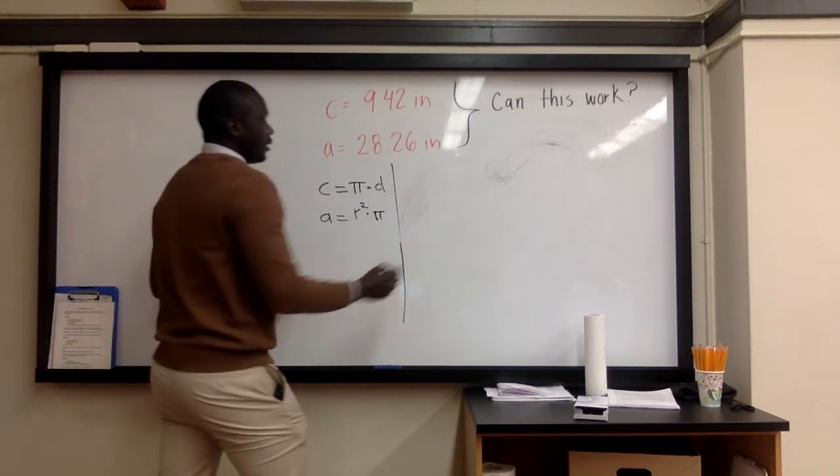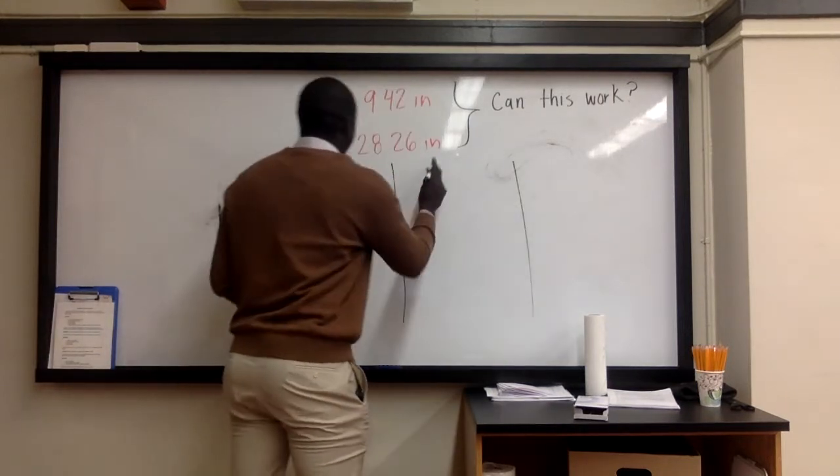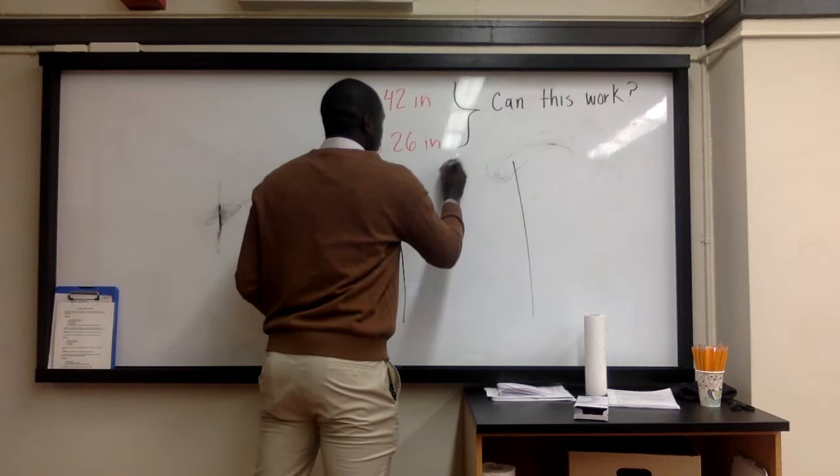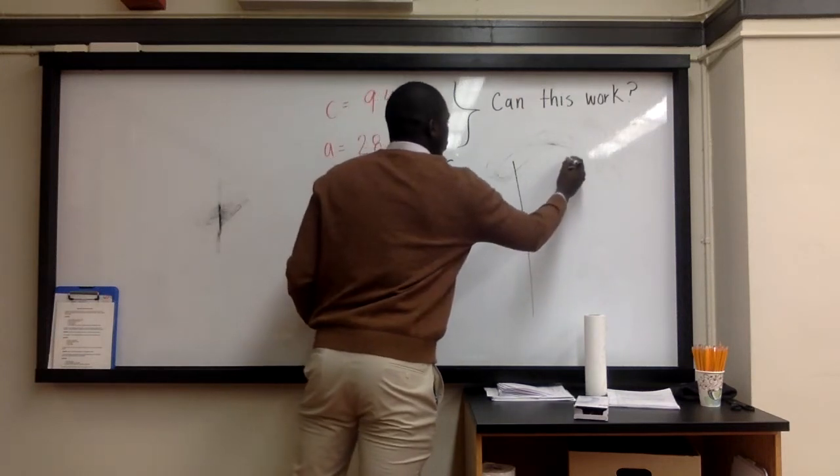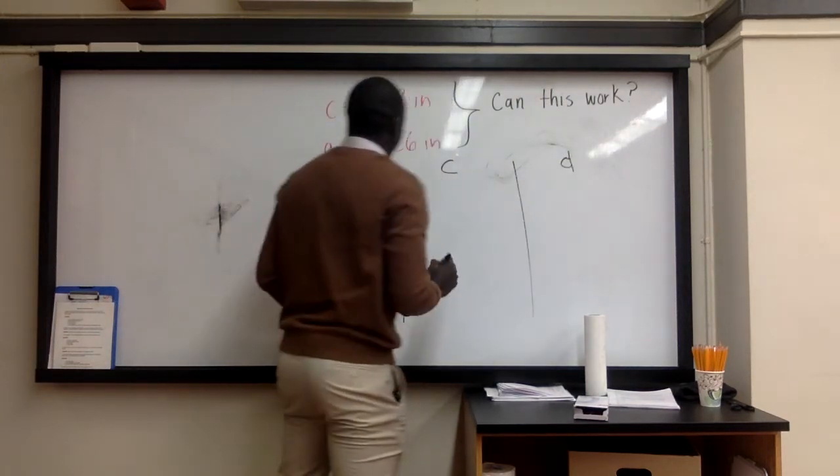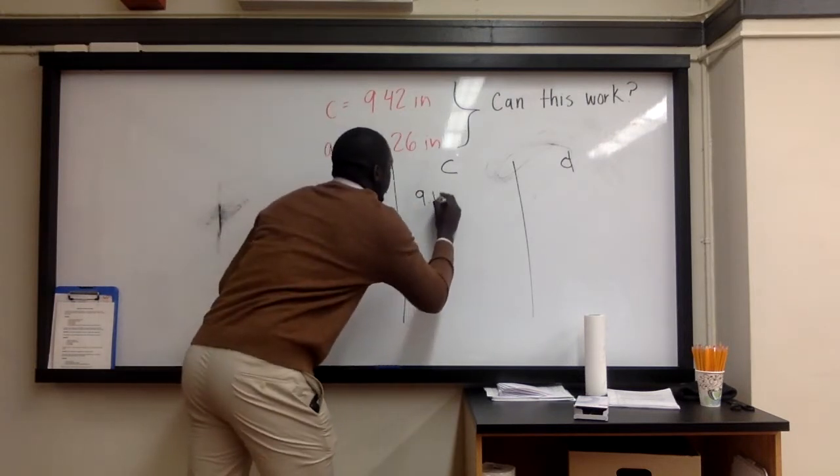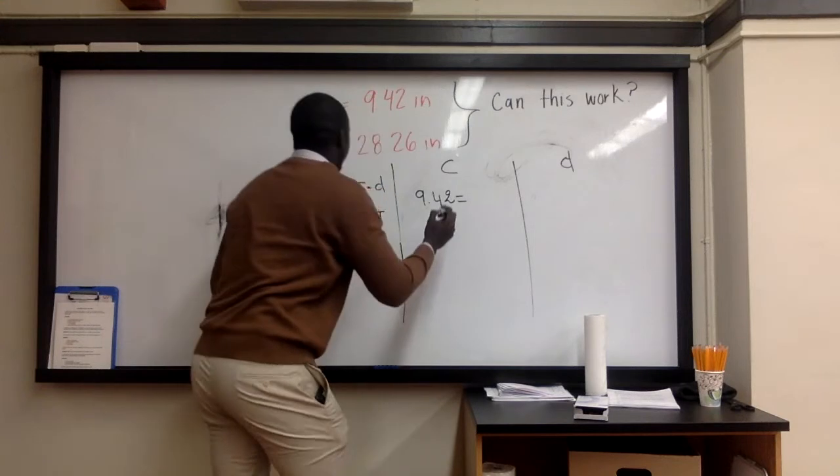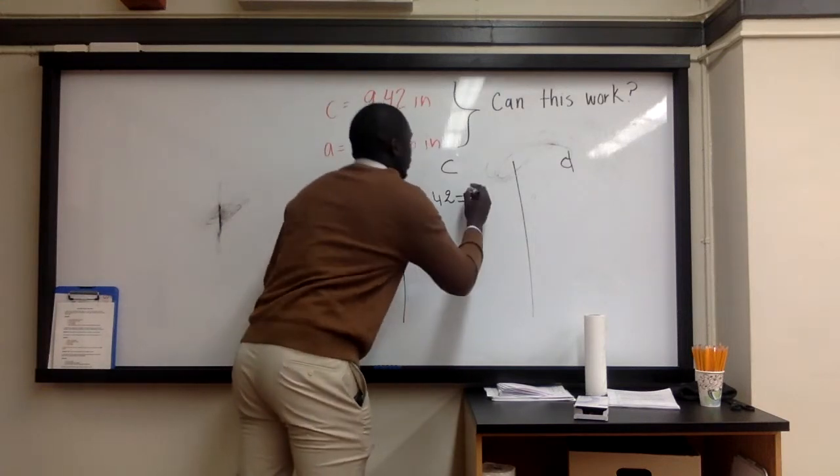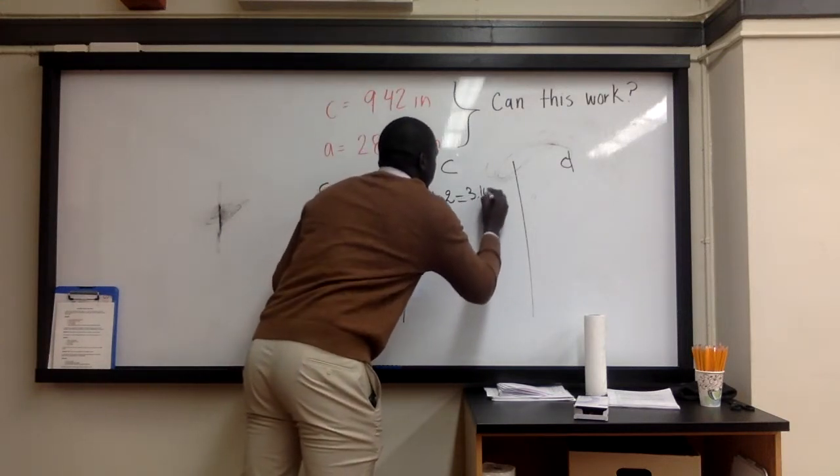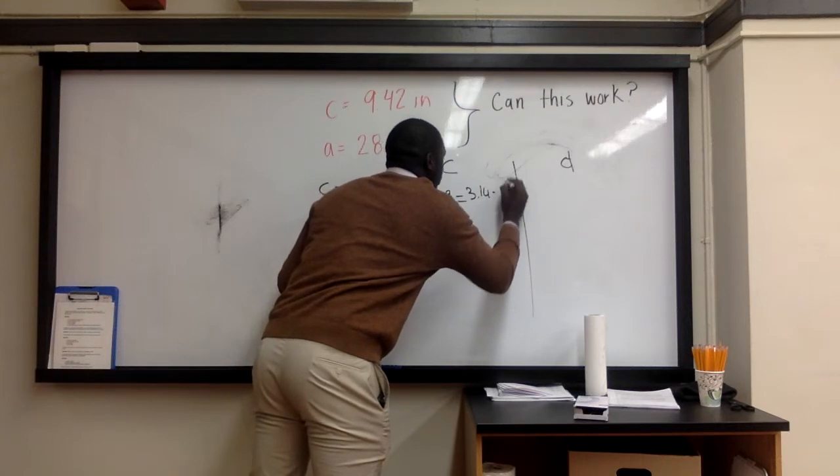Okay, you can do this. So I'll put C here and put D here, right? Cool. Now, the circumference is 9.42. That is equal to approximately 3.14 times D.